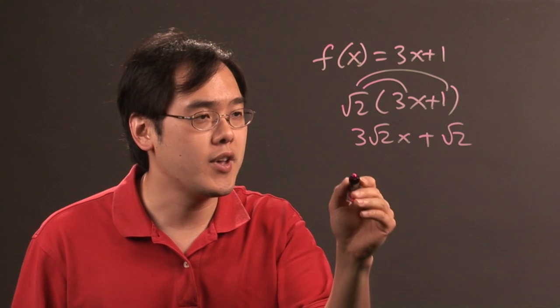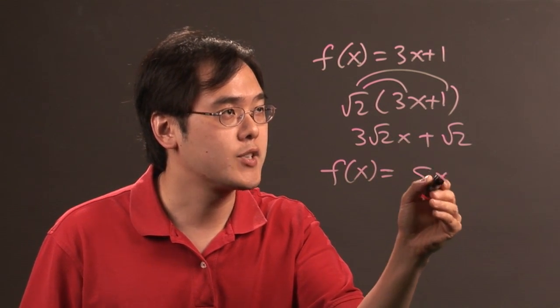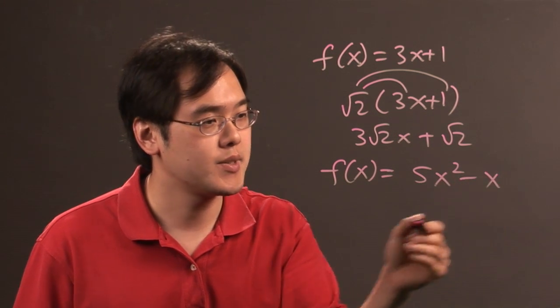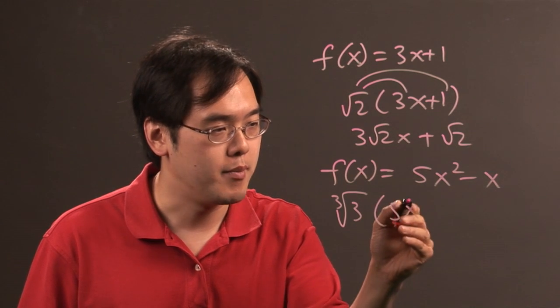Same kind of idea if you have a function f of x is equal to 5x squared minus x. If you're going to multiply, let's just say by cube root of 3, by this,